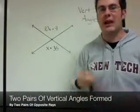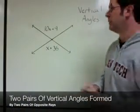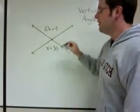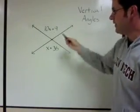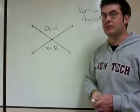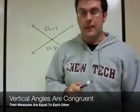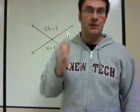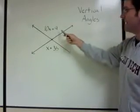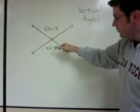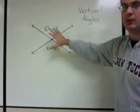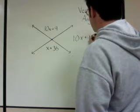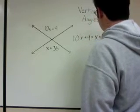Now when we have two pairs of opposite rays we have two pairs of vertical angles formed. These two angles are vertical angles. And these two angles are vertical angles. For this problem we're just going to deal with these two. We have 10x plus 9 and x plus 36. Now another fact about vertical angles is that they're congruent. That is their angle measures are equal to each other. So we can use that fact to solve this problem. Let's take a look. 10x plus 9 is equal to x plus 36 because these are vertical angles. So let's write that down first.